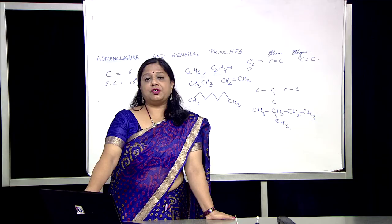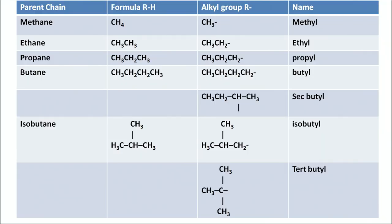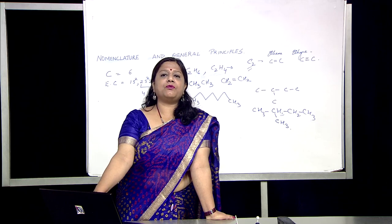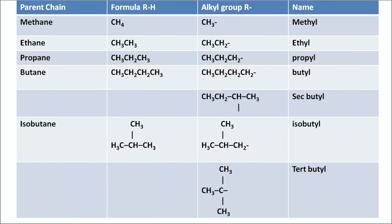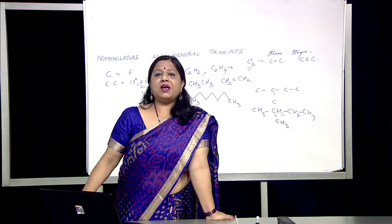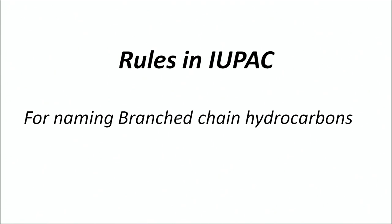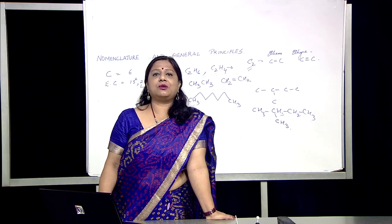Let us see secondary butyl, isobutyl, and tertiary butyl — these are conditions of certain isomers of butane. When you remove one hydrogen from the second carbon of butane, it becomes secondary butyl. When you remove one hydrogen from isobutane, it becomes isobutyl or tertiary butyl depending on which carbon the hydrogen is removed from. Since we are naming organic compounds, there are certain set rules to name branched chain hydrocarbons.